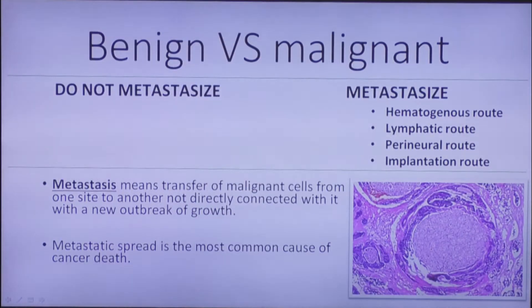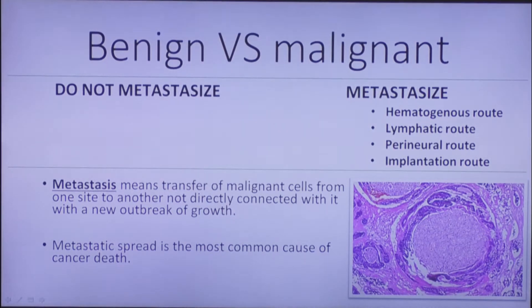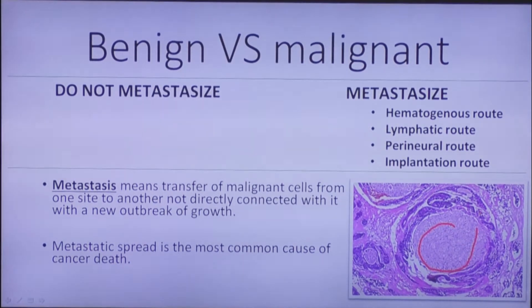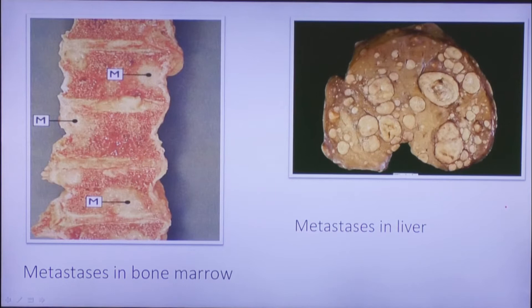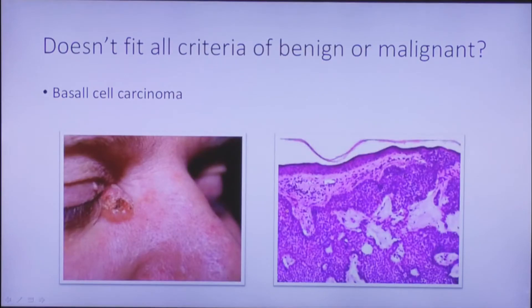Malignant tumors do metastasize. They have different routes of metastasizing, including hematogenous, lymphogenous, perineural, and contact routes. For example, sarcomas usually metastasize hematogenously, but this is not a 100% rule. On the picture you can see a nerve surrounded by tumor — this is an example of the perineural route of metastasizing. Other pictures show metastasis in bone marrow and metastasis in the liver.